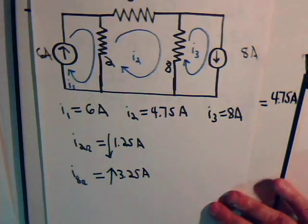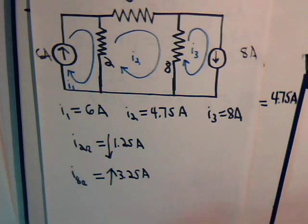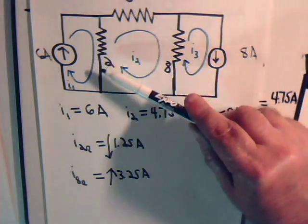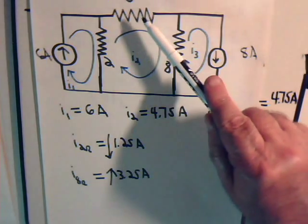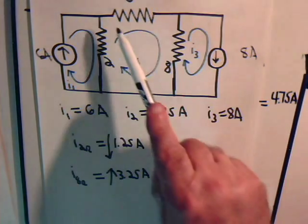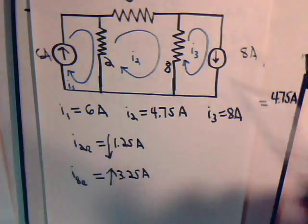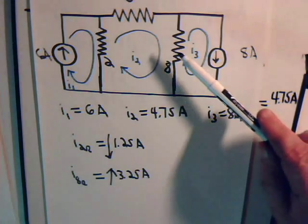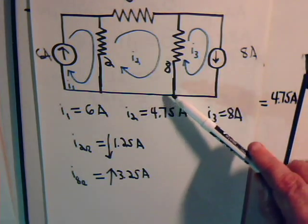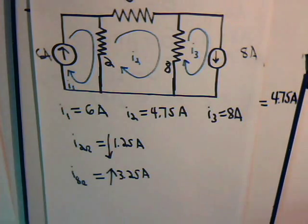So here for this resistor, 1.25 amps going down. For this resistor, 4.75 amps going that way. And for this resistor, 3.25 amps going in that direction. And that's it then for this circuit.